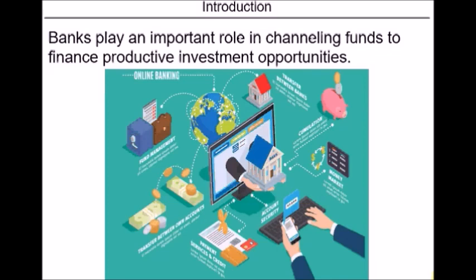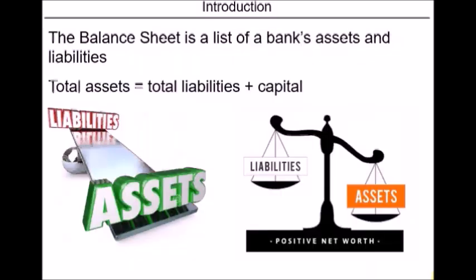This transfer of funds from those who have excess funds to those who have investment opportunities is basically the main function of the whole banking system. First of all, what is a balance sheet? A balance sheet is a sheet which lists all of the bank's assets and all of its liabilities, including the capital. The balance sheet is divided into two parts: on one side we have a list of all of the bank's total assets, and on the other side we have all of the liabilities, including the capital. Total assets equals the sum of total liabilities and capital.